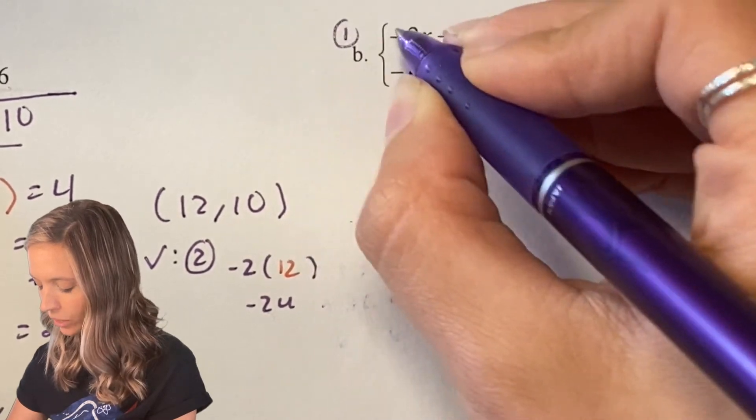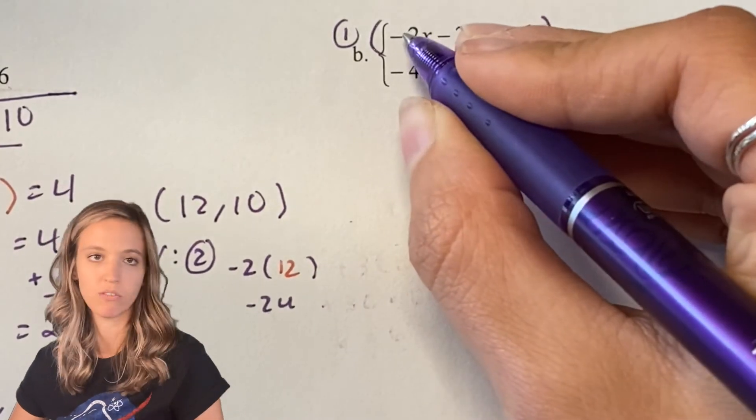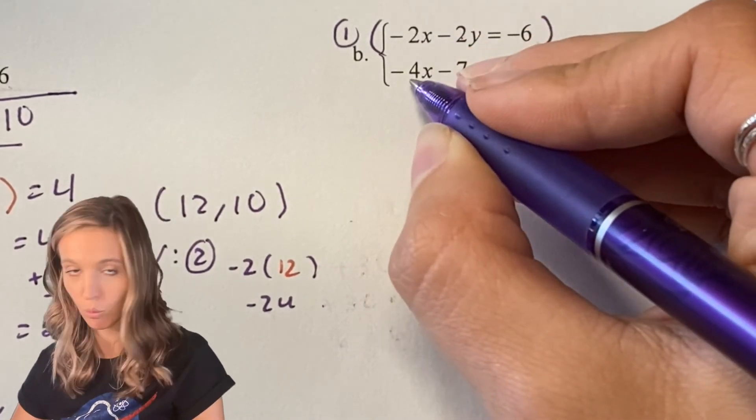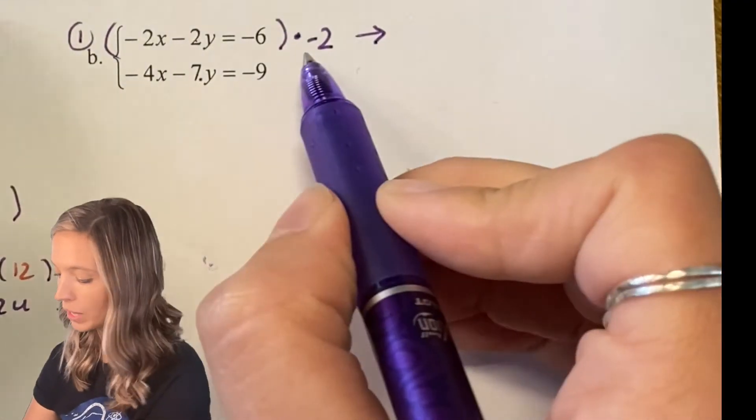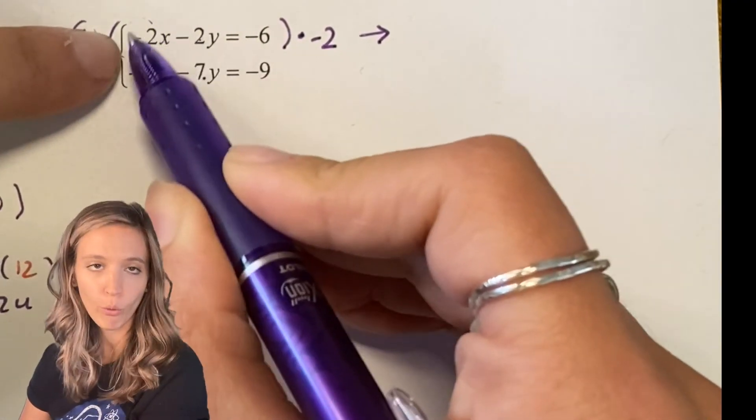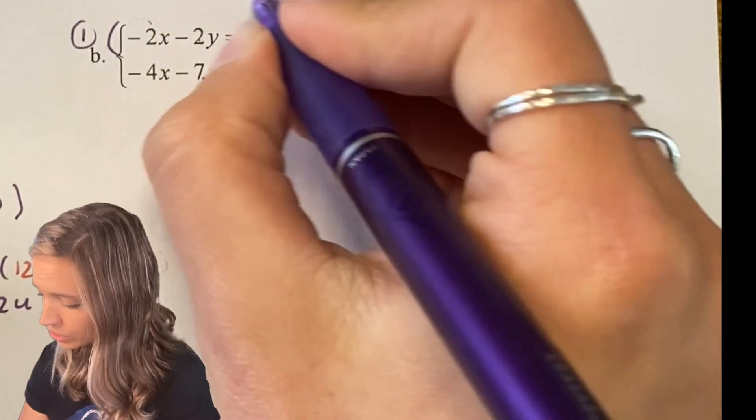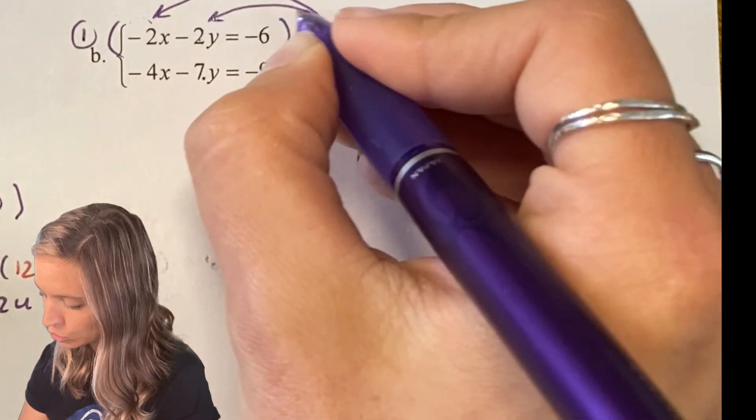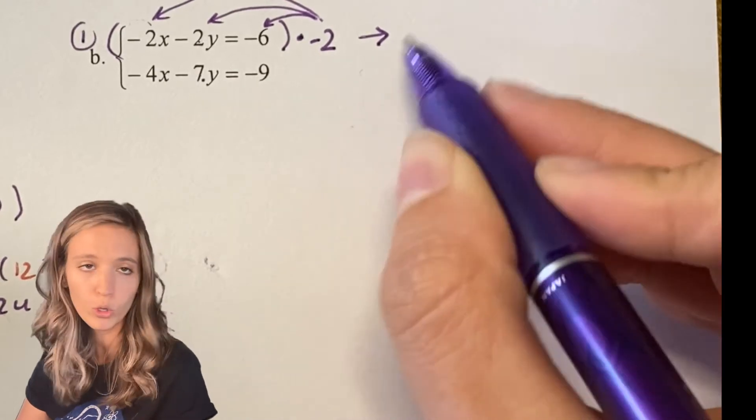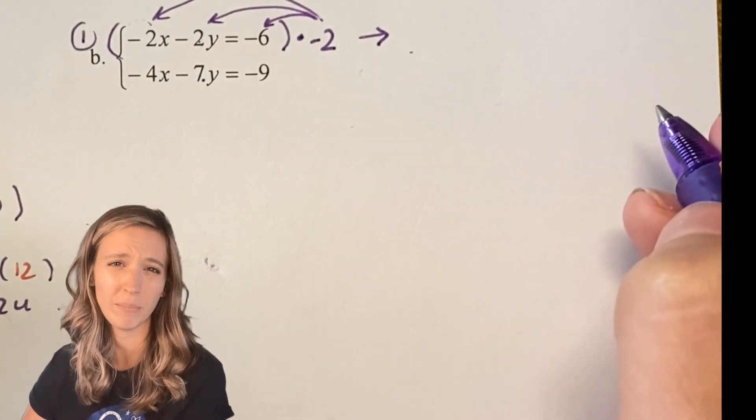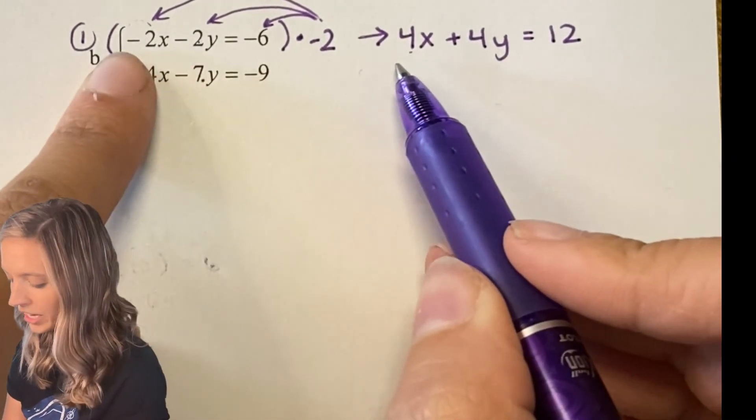I'm going to change the first equation so that I get a 4 here. Now I want to get a positive 4 because positive 4 plus negative 4, those would add out. So I'm going to multiply by -2. So when we multiply by -2 to change this to 4x, we have to multiply everything by -2 to maintain the equality. So I'm going to distribute this -2 to all three pieces of the equation and I'm actually going to write my new equation over here so that I'm writing a whole new system.